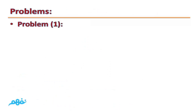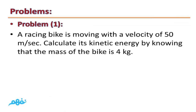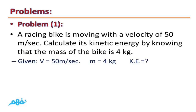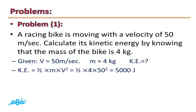Problem number one: a racing bike is moving with a velocity of 50 meters per second. Calculate its kinetic energy, given that the mass of the bike is 4 kilograms. Given: velocity equals 50 m/s, mass equals 4 kg, kinetic energy is unknown. Kinetic energy equals half times mass times velocity squared equals half times 4 times 50 squared equals 5,000 joules.